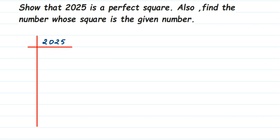I'm going to start with 3, because 2 is an even number and cannot divide 2025. So the next prime number is 3. I'll take 20 together since 3 cannot divide 2 alone. 3×6=18, remainder 2, combined with the next digit gives 22. 3×7=21, remainder 1, combined gives 15. 3×5=15.